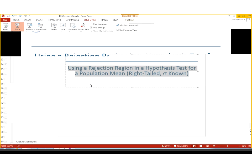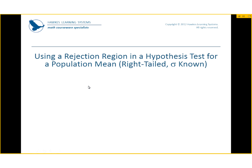Hey guys, this video is about using a rejection region in a hypothesis test for a population mean which is right-tailed, and our population standard deviation is known. We are using a rejection region and a hypothesis test for a population mean where we know the standard deviation and we know it is right-tailed.